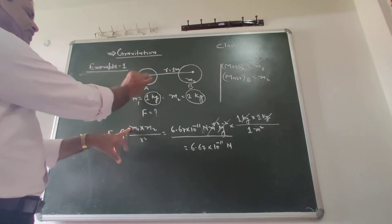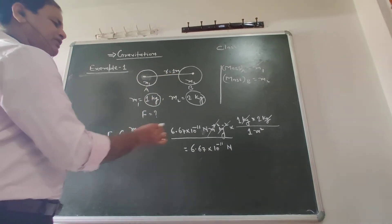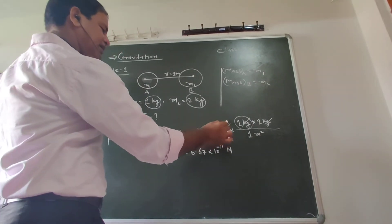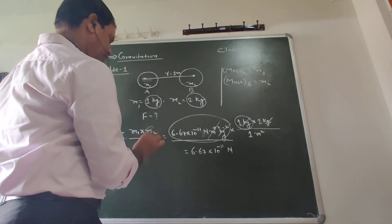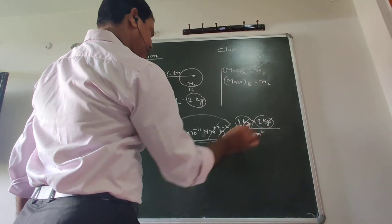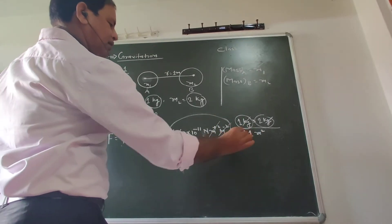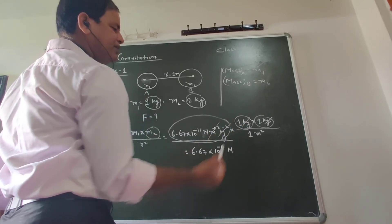M1 represents mass of A, M2 represents mass of B. M1 has a value of 1 kg, M2 has a value of 2 kg, and R is the value of 1 meter. R squared is the value of 1 meter squared.